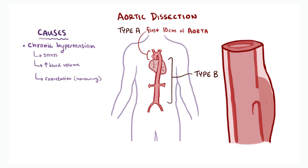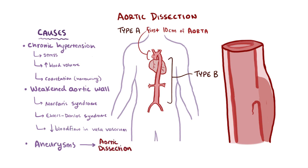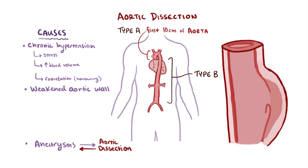In order for an aortic dissection to occur, an underlying condition usually has to exist that weakens the aorta's wall. Connective tissue disorders, like Marfan's and Ehlers-Danlos syndrome, can cause a dissection, as well as decreased blood flow to the vasa vasorum. Aneurysms can be a cause of aortic dissection as well. An incidental dissection can also cause aneurysms because the dissection weakens the blood vessel wall. In other words, weak walls can lead to an outpouching of the blood vessel or a break in the tunica intima, and both of these weaken the walls further.